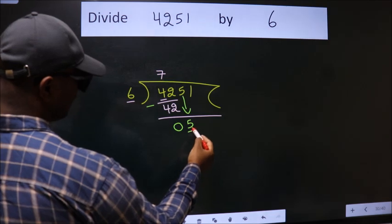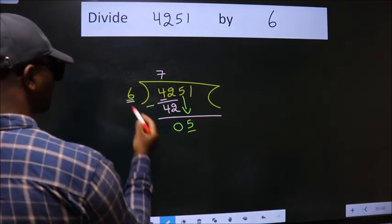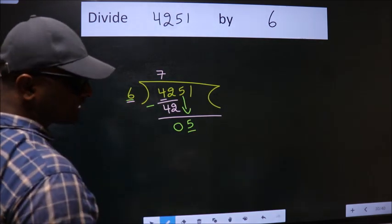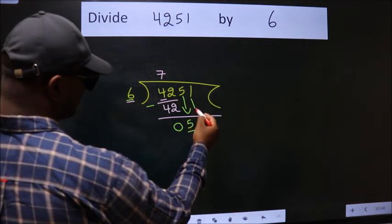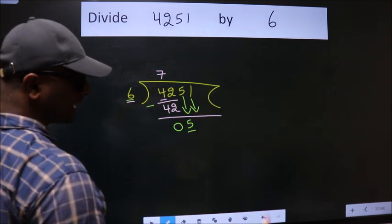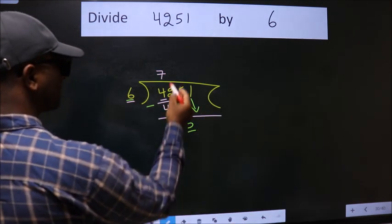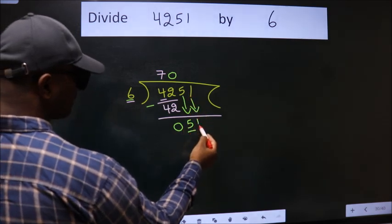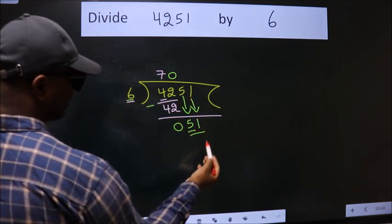Here we have 5, here 6. 5 is smaller than 6. So, we should bring down the second number. And the rule to bring down second number is put 0 here. Then only we can bring down this number. So, 51.